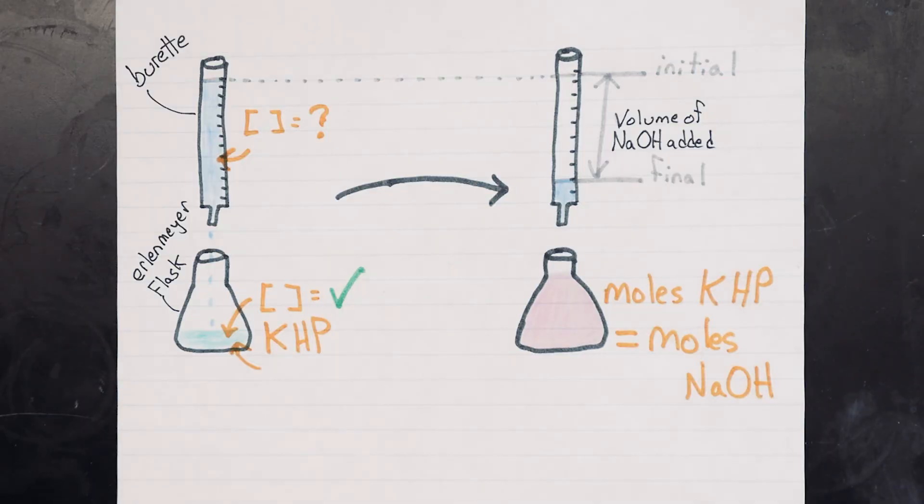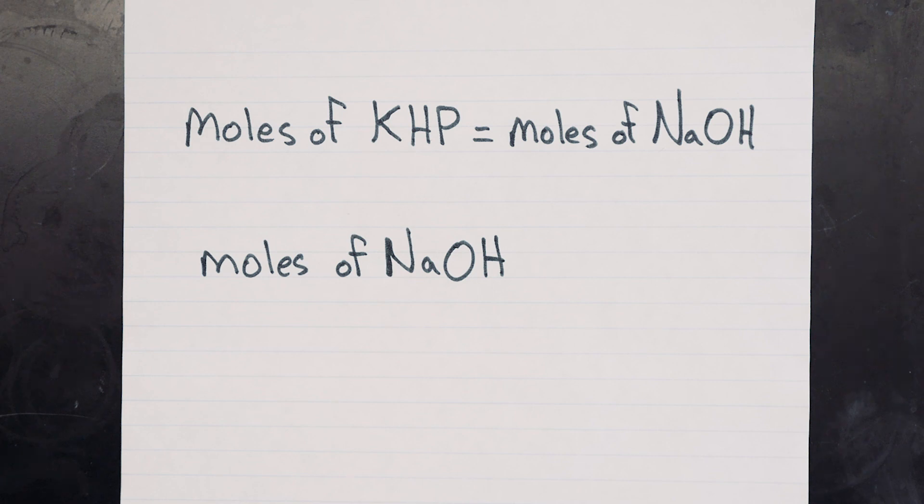Next we determine how much sodium hydroxide reacted with our standard solution by taking the difference between the initial and final burette volumes we had. We know that in that volume of sodium hydroxide there must have been the same number of moles of KHP and NaOH. We're supposed to find the concentration in molarity units, which is moles per liter, so we just take the number of moles we determined and divide it by the number of liters we used, and we're done.